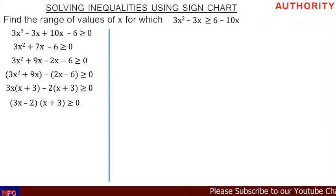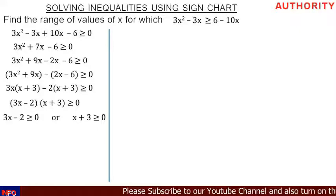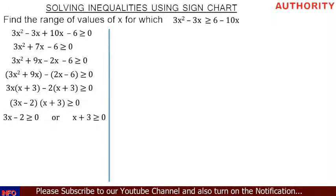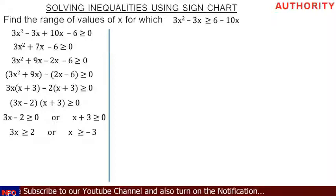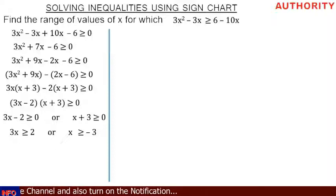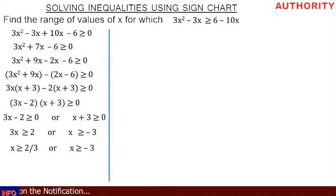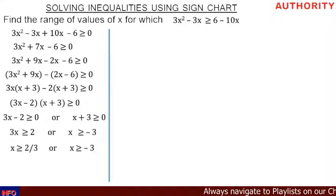Let's separate them: 3x minus 2 is greater than or equal to 0, or x plus 3 is greater than or equal to 0. From the first: 3x is greater than or equal to 2, so x is greater than or equal to 2 over 3. From the second: x is greater than or equal to minus 3. So we've obtained two values: x ≥ 2/3 or x ≥ −3.